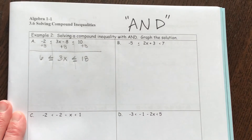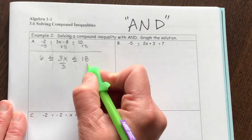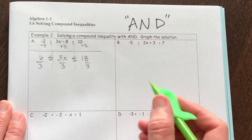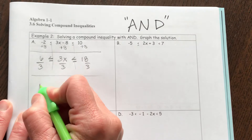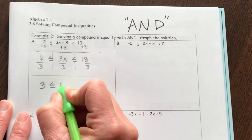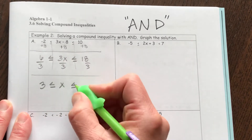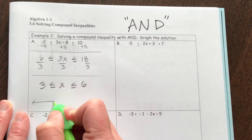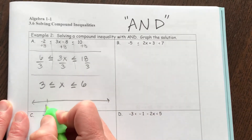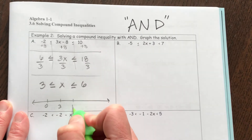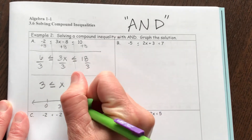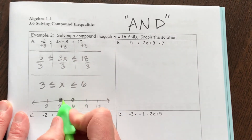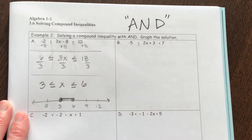And now when I divide by 3, I just have to do it to the low end and the high end of my inequality. So now I'll have 3 is less than or equal to X, and less than or equal to 6. My graph would look something like this — I'm gonna circle 3 and shade it in, circle 6 and shade it in, and then shade in the middle.